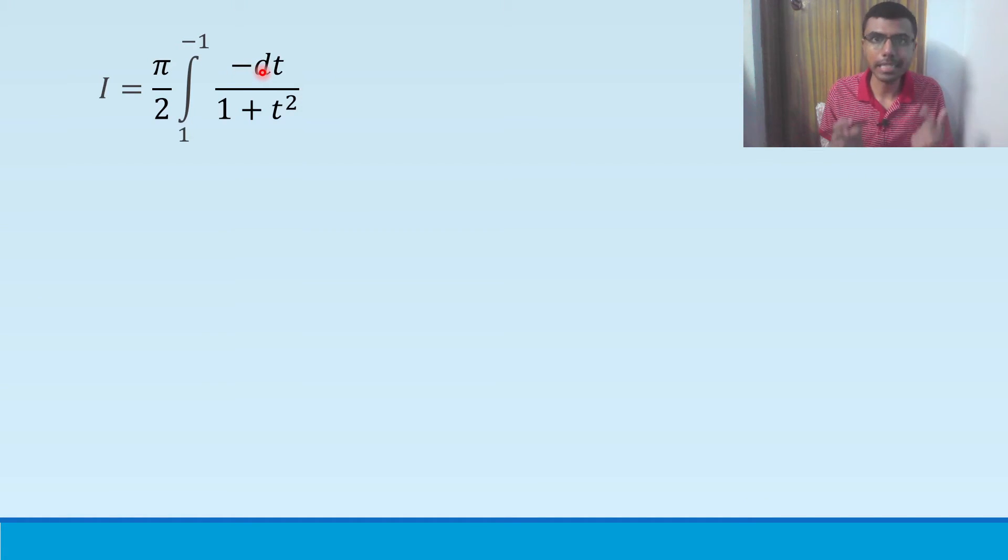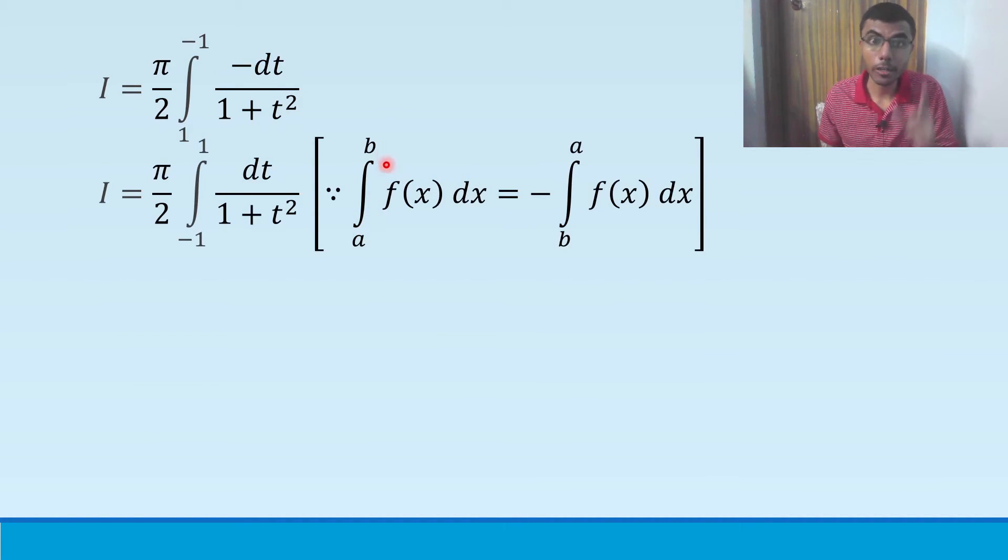Now there is one more property in definite integration, which basically means that integral a to b, f of x dx is nothing but minus integral b to a, f of x dx. What does this mean? In simple words, if you will send this minus sign to the integral, the limits will get changed. Here it is 1 to minus 1. Minus if it will go to integral, it will become minus 1 to 1. So instead of this minus which will send to integral, I have minus 1 to 1. The limits changed.